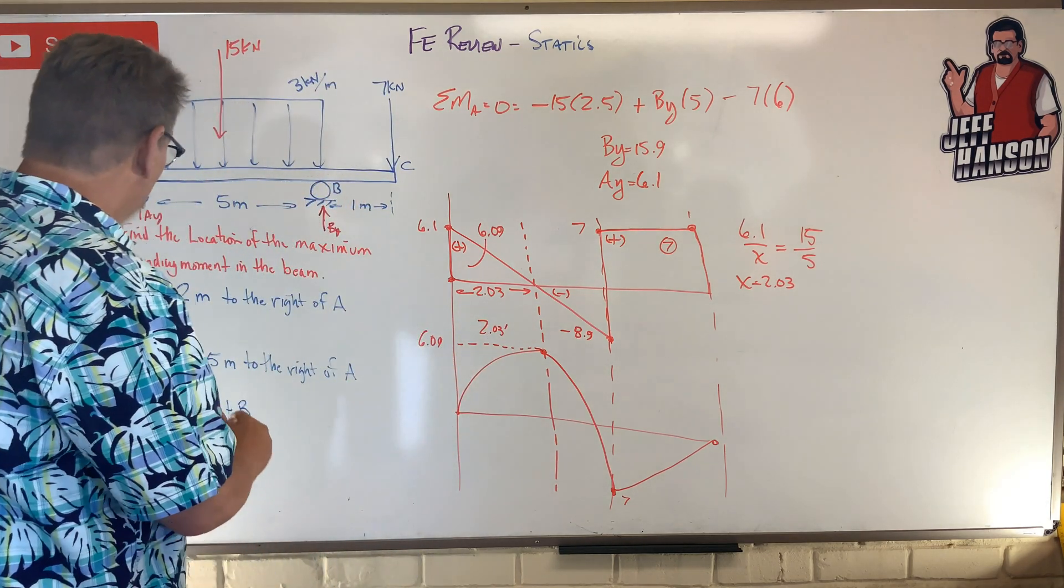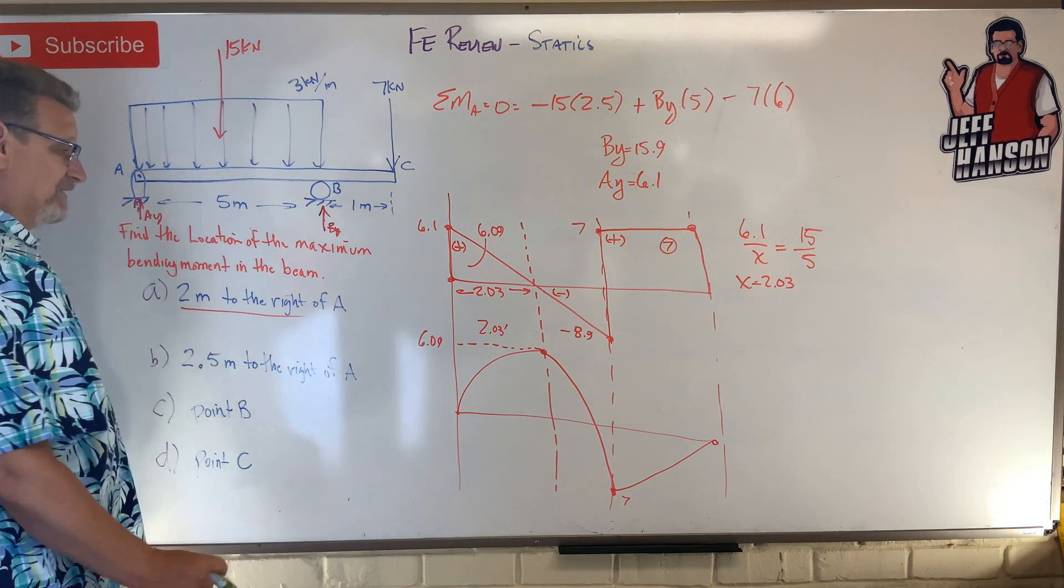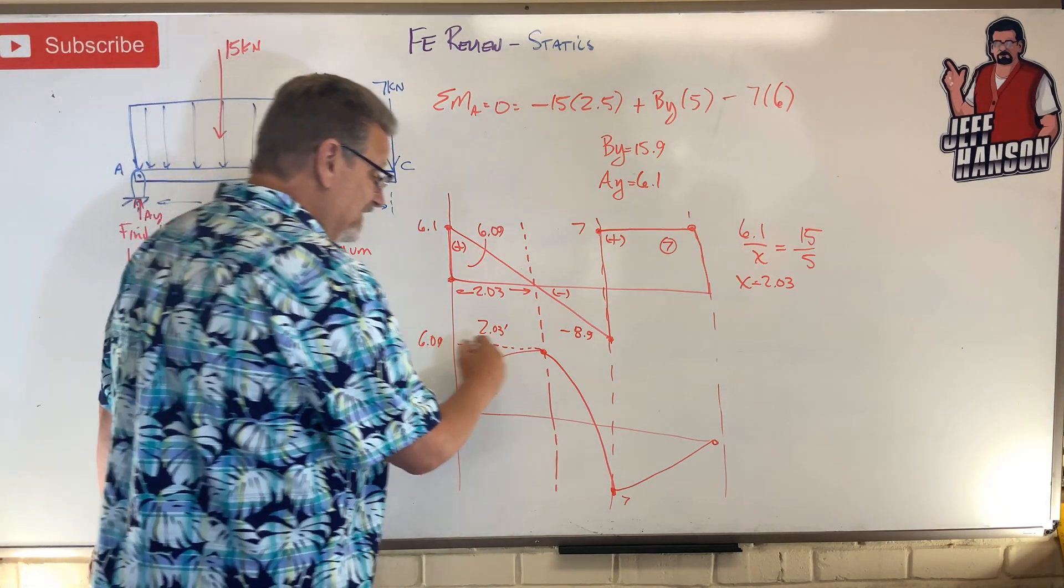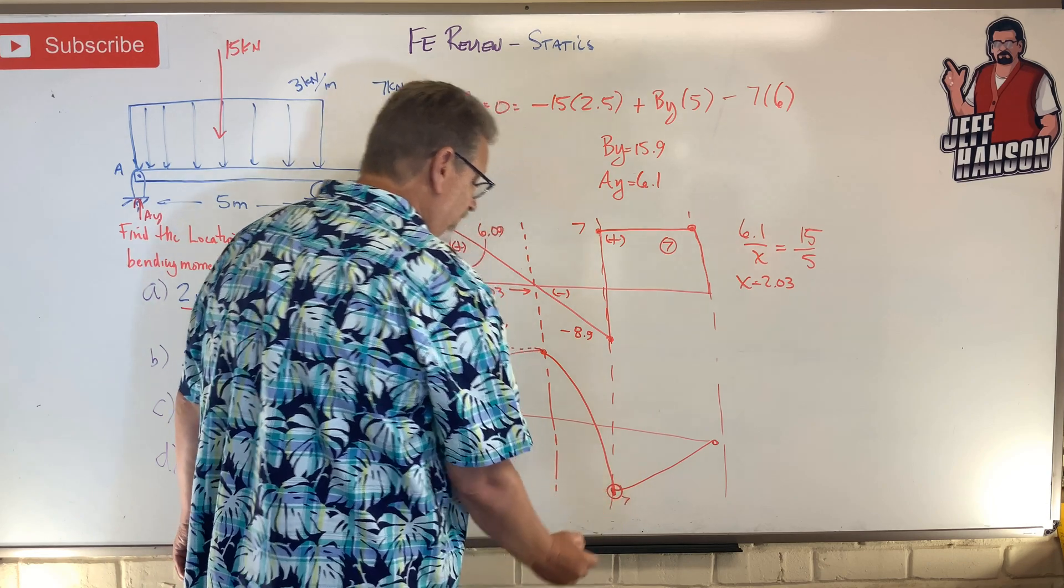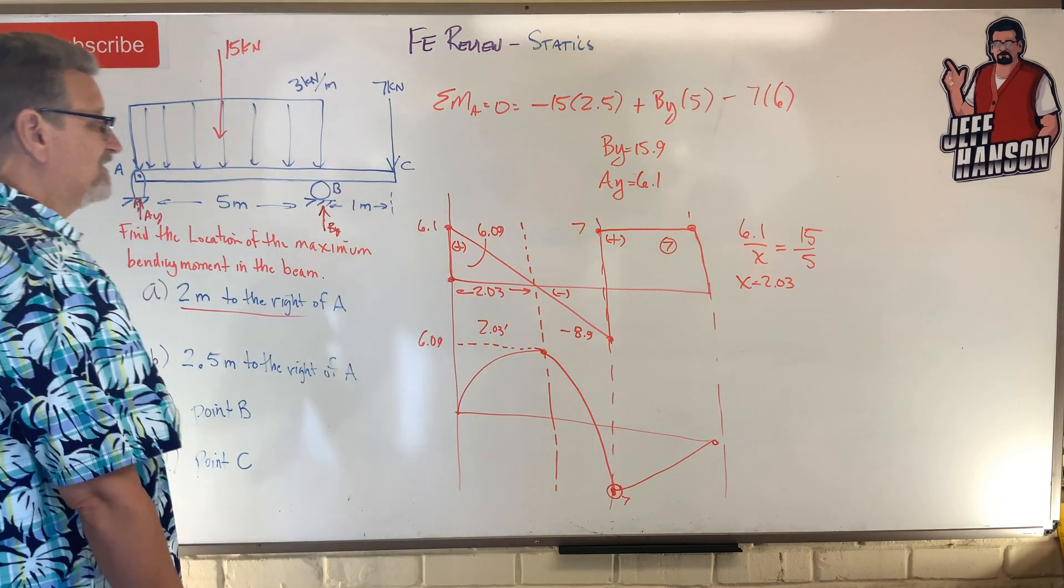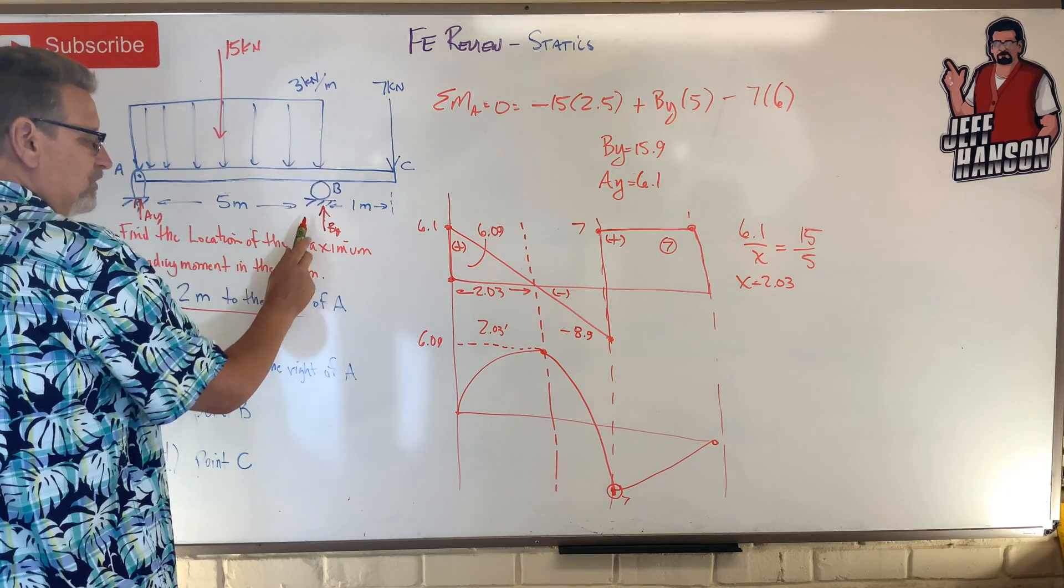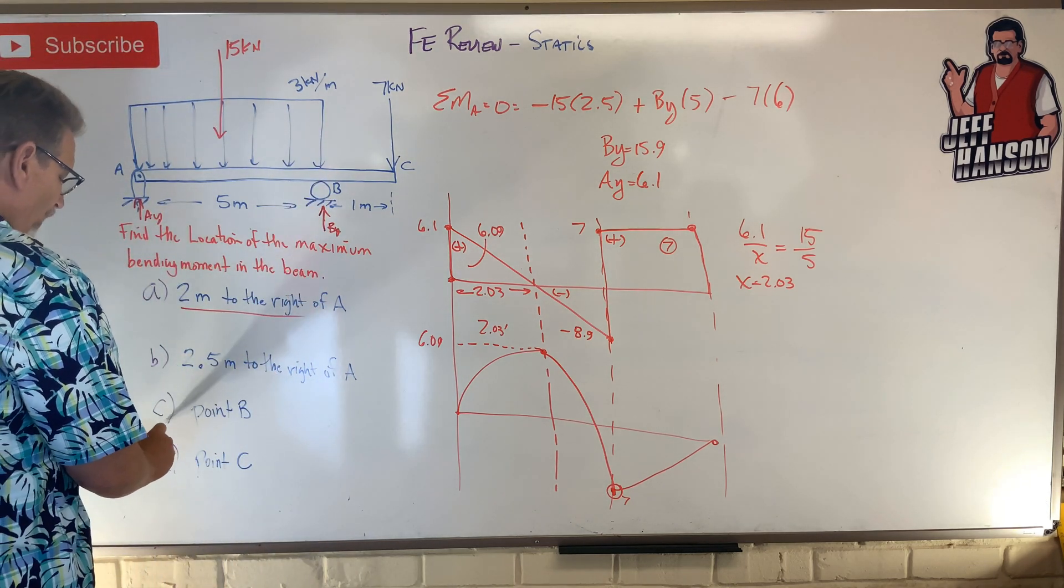There was an answer right there that says two meters to the right, and you might say hey, that was it. But it's not, because this one over here is bigger. And where does that one happen? Right here, right here at the where that distributed load ends, at point B.